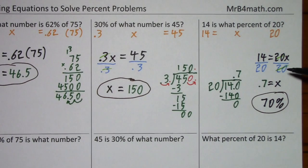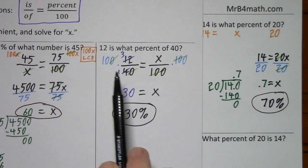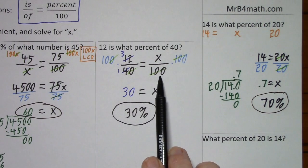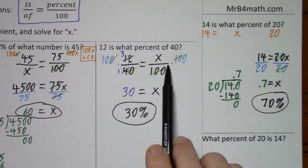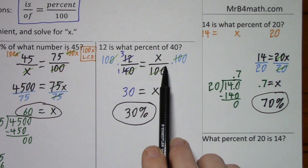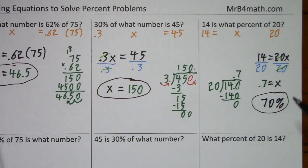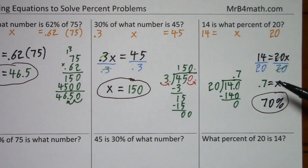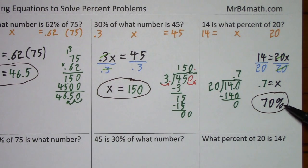I mentioned at the beginning that I prefer proportions when they ask 'what percent,' because with a proportion we don't have to move the decimal — we account for it by saying divided by one hundred, which is what the percent sign means. But with an equation, when I put in x, I didn't account for it being a percentage. So after solving for x, I have to move the decimal two spaces towards the percent sign.